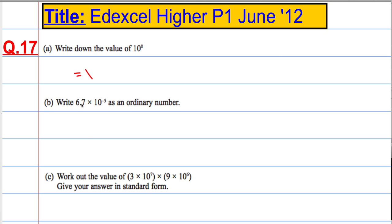Part B, write 6.7 by 10 to the minus 5 as an ordinary number. So, it's like doing 6.7 by, well, 10 to the minus 5 is 1 over 2, 3, 4, 5. OK. So, what we need to do is make this number 100,000 times smaller.